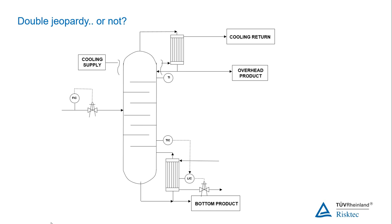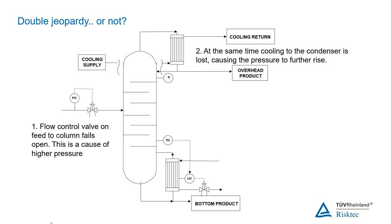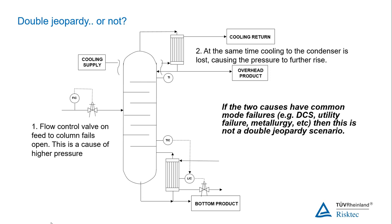Look at this example. The first failure — loss of flow control — will cause higher pressure in the column. The second failure — loss of cooling — will also cause pressure to rise in the column. If the two causes have common modes, for example loss of the control system or loss of utilities, then this is a common cause failure and not double jeopardy.